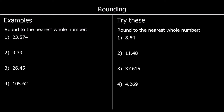So let's look at some examples — rounding to the nearest whole number. Our key number is the next digit down, which is the one after the decimal point. If it's 5 or above, we round up; if it's not, we leave it as it is. So 23.574 — we're only looking at this 5, and it is 5 or above, so it rounds up. So 23 goes up to 24 — it's closer to 24 than it is to 23.